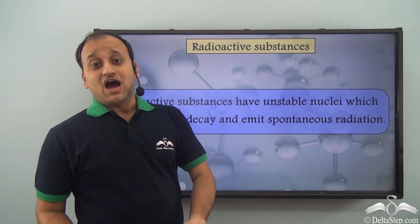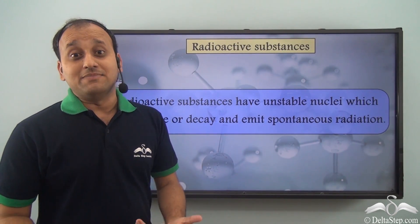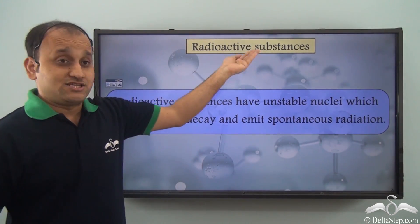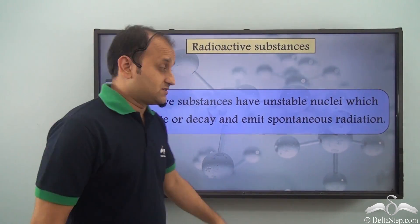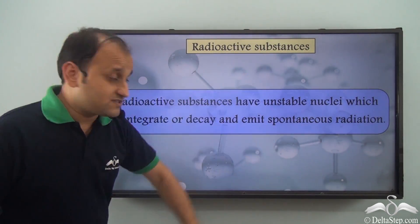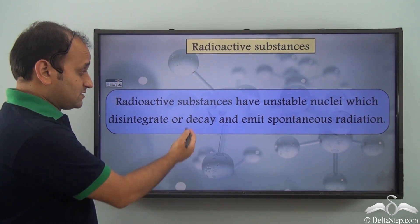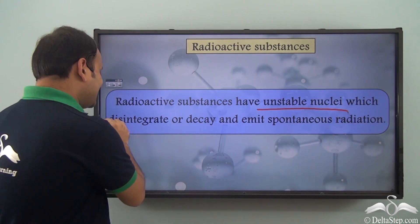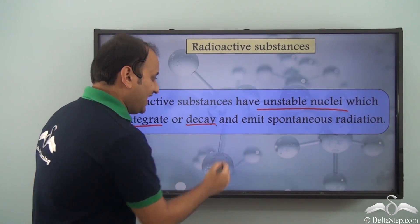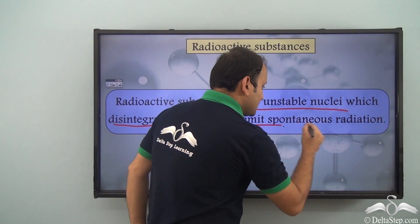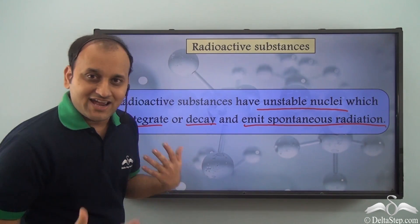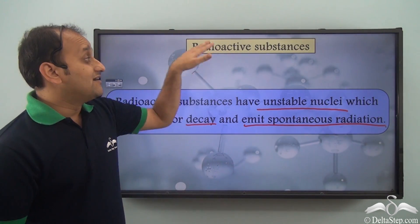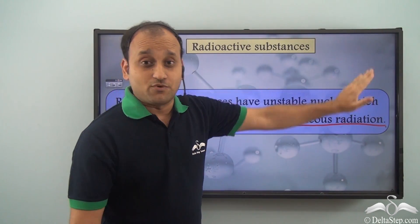Nuclei having a number of protons greater than 83 are unstable, and such unstable nuclei emit radiation. That is why they are called radioactive substances. Radioactive substances have unstable nuclei which disintegrate or decay and emit spontaneous radiation.